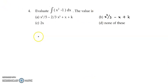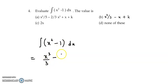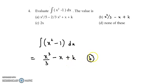Now let's look at question 4: evaluate integration of x square minus 1 with respect to x. x square ka integration is x cube by 3. Minus 1 is a constant, so constant ka integration is constant into x, that is 1 into x, which gives minus x plus k. So the correct answer is option b.